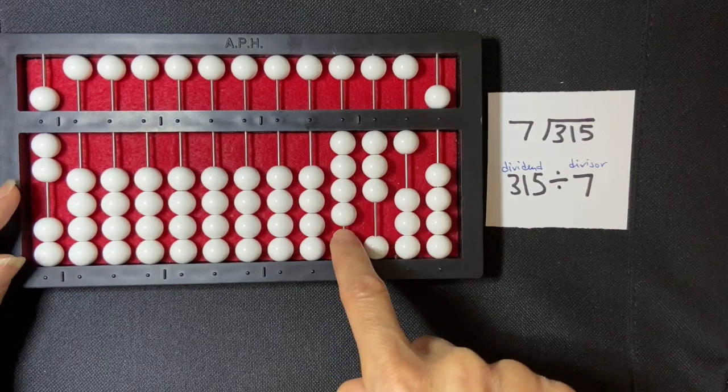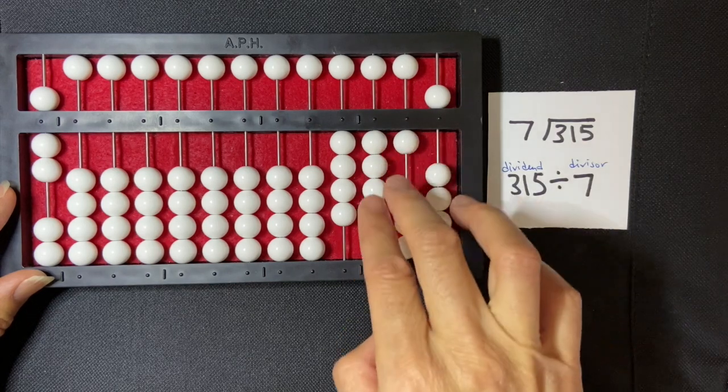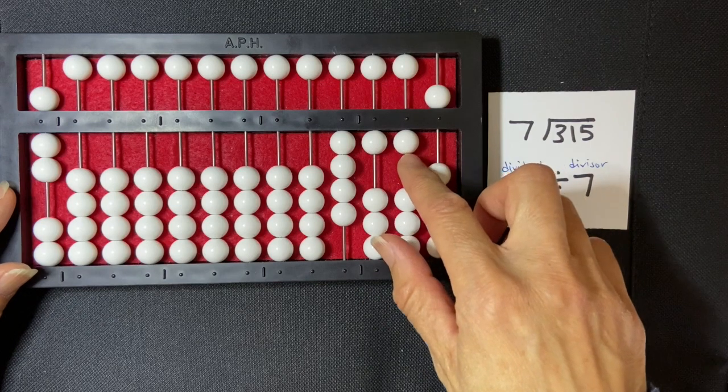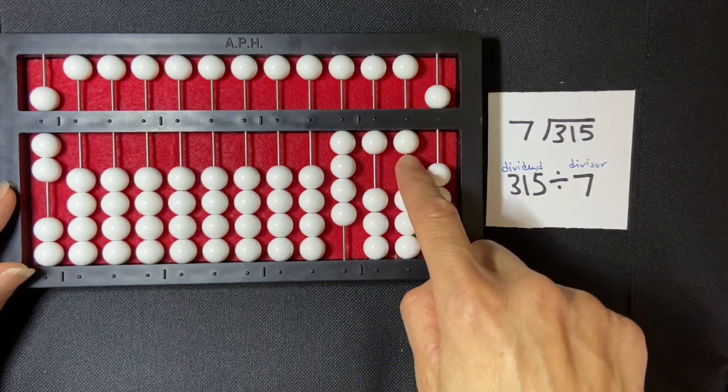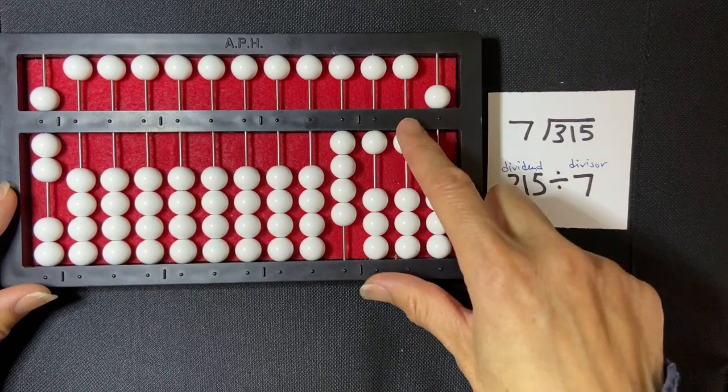Seven times four is 28, so I'm going to subtract 28 from 31. So I'm going to subtract the 20, and then over here when I go to the tens column, I can't subtract eight, but I can subtract one.